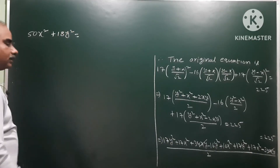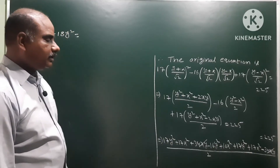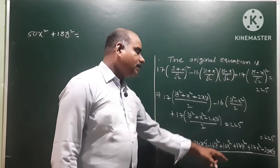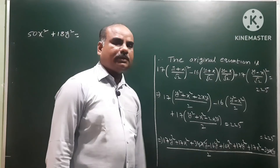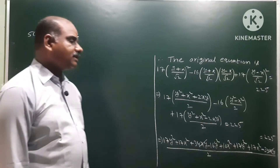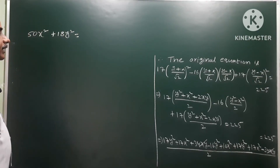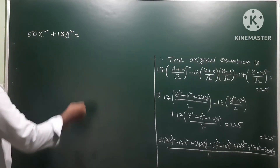The numerator over denominator 2 equals 225. After cross-multiplication: 50x² + 18y² = 2 × 225 = 450. This is the required equation before final simplification.